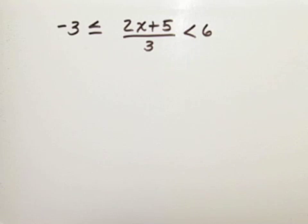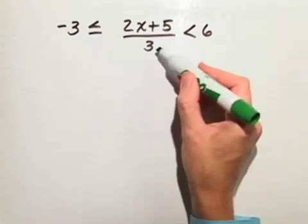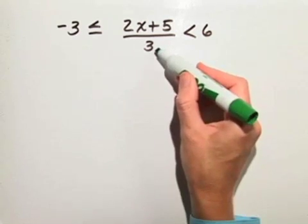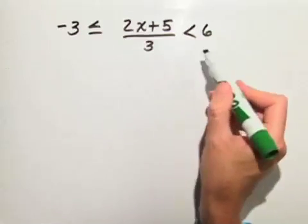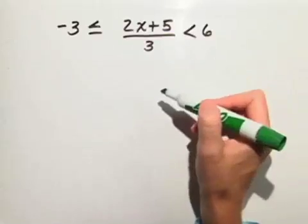Let's solve the compound inequality. Since we have a fraction with the denominator of 3, we can multiply all 3 parts by 3 in order to clear the fraction.